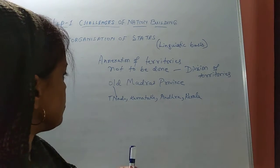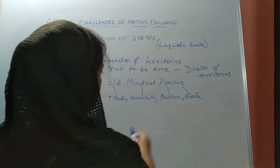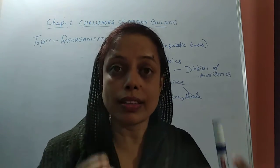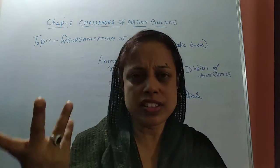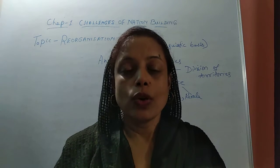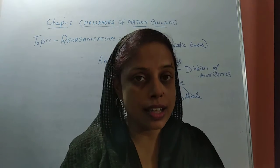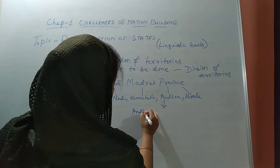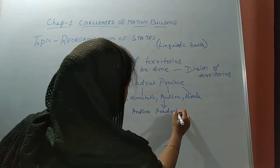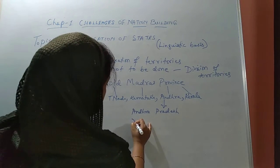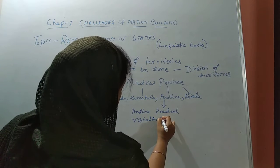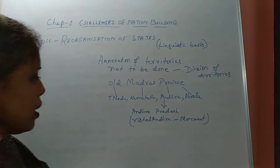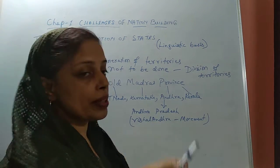At that time, all of Madras Province consisted of four areas: Tamil Nadu, Karnataka, Andhra, and Kerala. These four areas were compacted into one Madras Province. It was from this one place that a movement started on a linguistic basis — in the Andhra area. The people of Andhra said they want a separate Andhra state, and his name — the movement — was called Vishal Andhra.